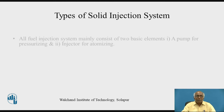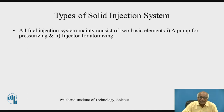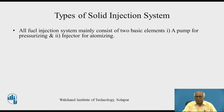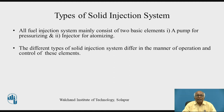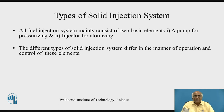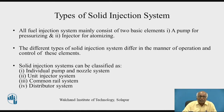Now, what are the different types of solid injection system? All fuel injection systems mainly consist of two basic elements: one is a pump for pressurizing, and another is an injector for atomizing. The different types of solid injection system differ in the manner of operation and control of these elements. They are classified mainly into four types: individual pump and nozzle system, unit injector, common rail system, and distributor system.